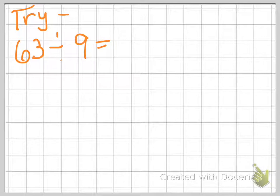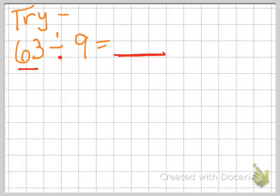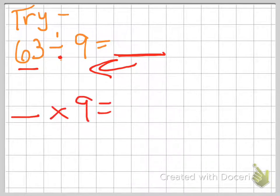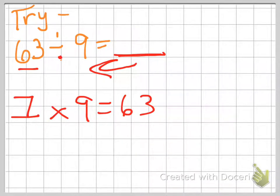Alright, how did you do? Did you need to draw a grid, or did you use a multiplication fact? Let's try a multiplication fact. We're looking for the answer: 63 divided by 9 equals something — or if you do the inverse, something times 9 equals 63. If you know your multiplication facts, you'll know that 7 times 9 equals 63.